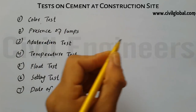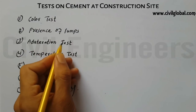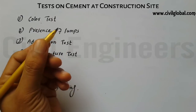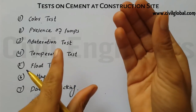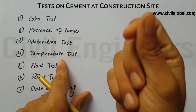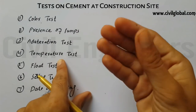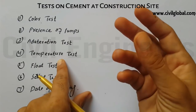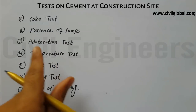The third test is the adulteration test. When you put the cement in your hand and rub it between your fingers, it should feel smooth. If it feels rough, that indicates adulteration with sand. The cement should feel smooth when rubbed between the fingers.